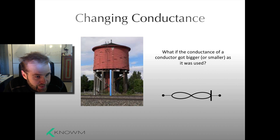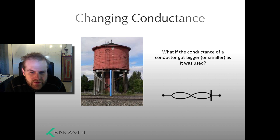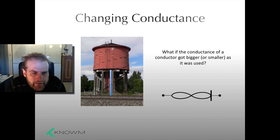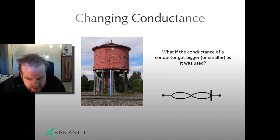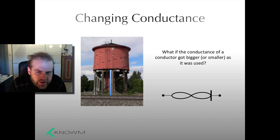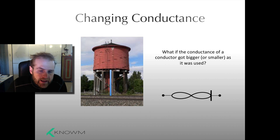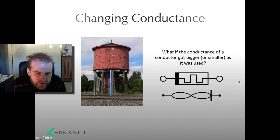So the question becomes: what happens if the conductance of our conductor changes as we use it? And that's, in essence, all a Memristor is. It's a resistor that changes resistance — or alternately a conductor that changes its conductance as you apply voltages to it, as you use it. This is the symbol we like to use here at GNOME, and this is the standard symbol of a Memristor.